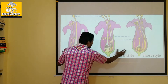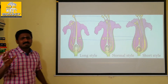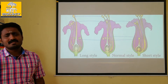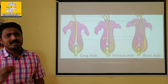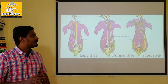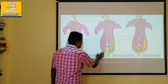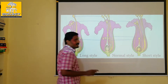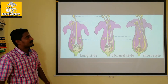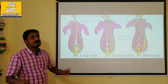Now, there are three types of characters. If you look at the characters, you will see that there are three types. Because of cross-pollination, and to avoid self-pollination.